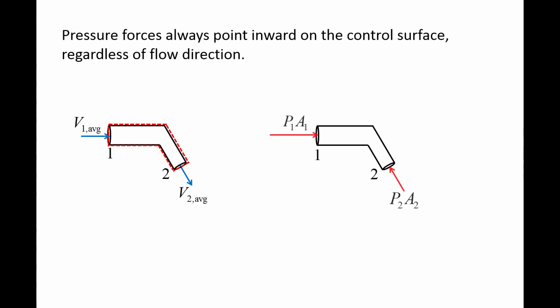The pressure force can be calculated by multiplying the local gauge pressure times the cross sectional area. The pressure force at the inlet is P1 times A1, while the pressure force at the outlet is P2A2. Both P1 and P2 are gauge pressures. Notice that the force vectors point inward at both the inlet and outlet, even though the flow direction is outward at the outlet.